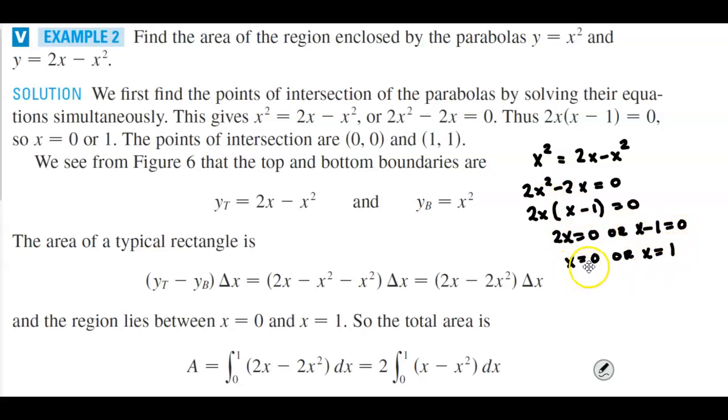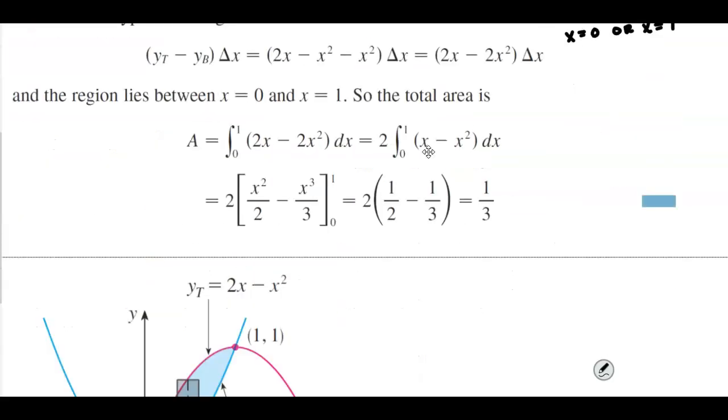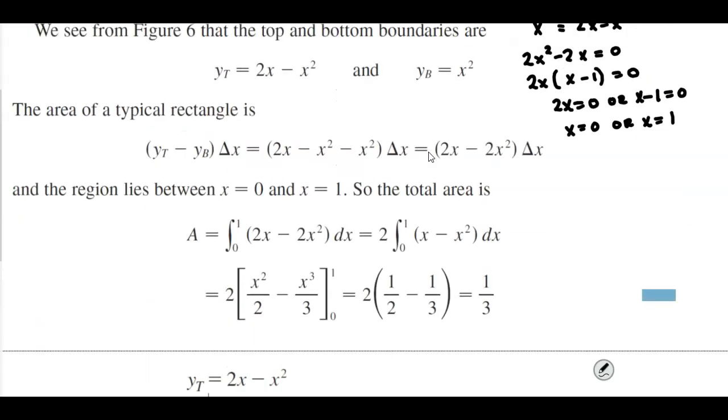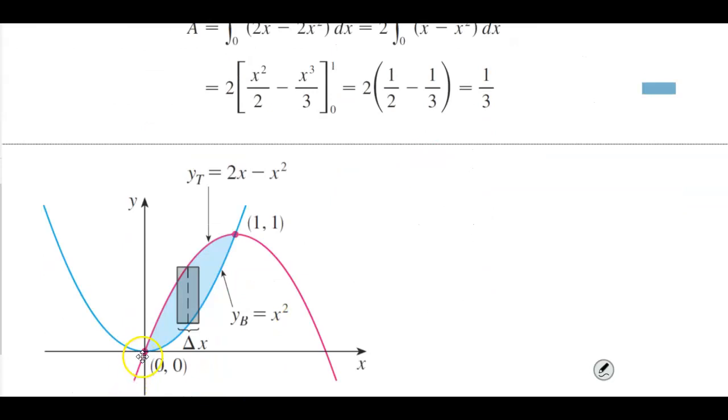Therefore, we get x equals zero and x equals one. That gives us the points of intersection. So now we know that the lower limit is going to be zero and the upper limit is going to be one.